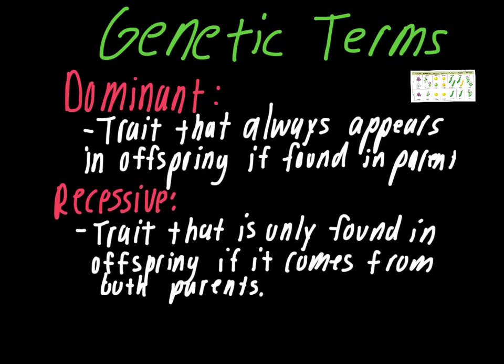So dominant, again, a trait that always appears in the offspring if it's found in just one of the parents. It doesn't matter which one it is, as long as it's found in at least one. Recessive is a trait that's only found in the offspring if it comes from both of the parents.